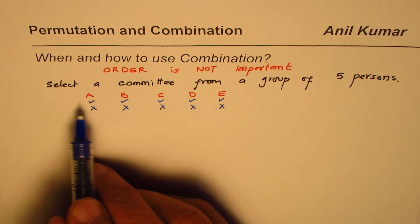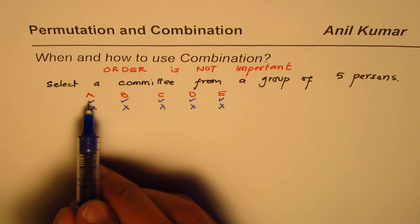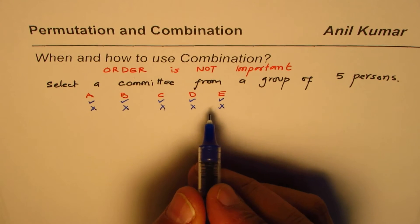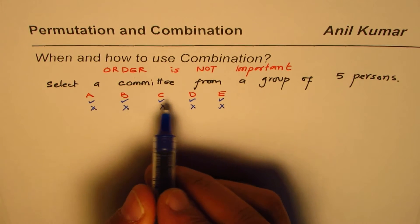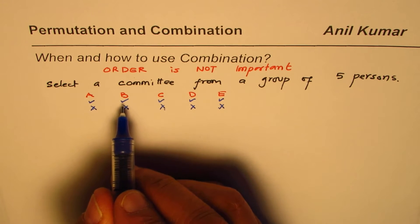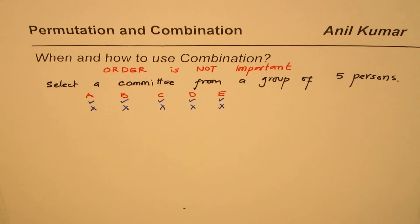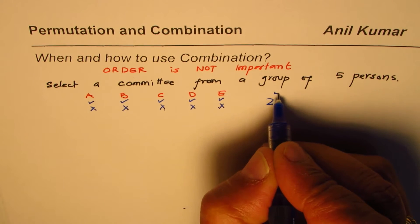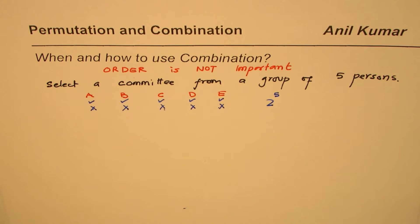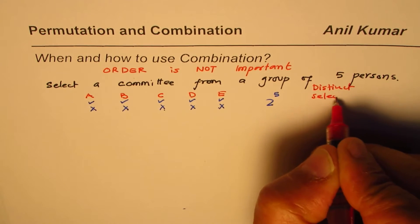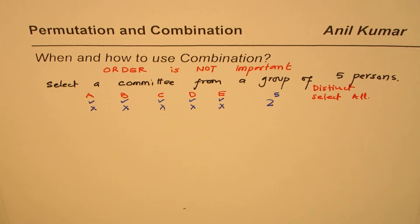When choosing a committee from a group of five persons with no restriction, you could choose none of them, all of them, or any combination of one, two, three, or four. For every person in the group we have two ways of choosing — select or not select — giving us 2 × 2 × 2 × 2 × 2 = 2^5. In general, the result is 2^n.